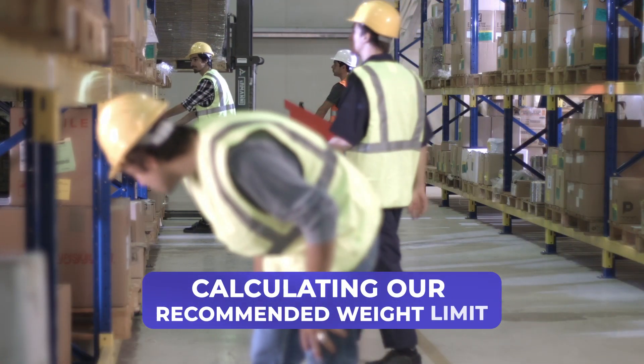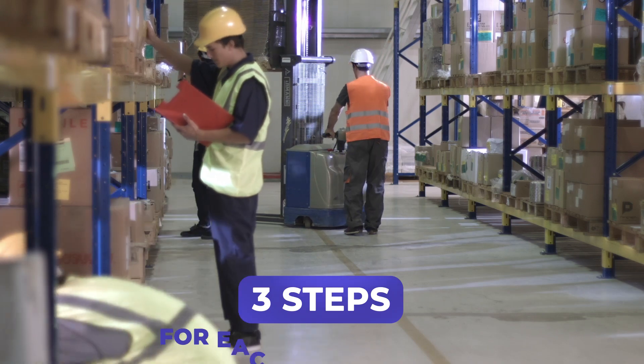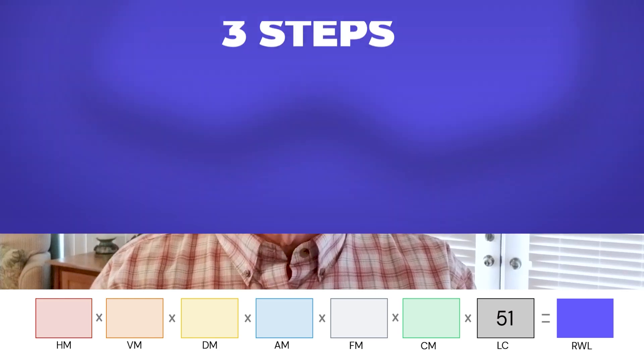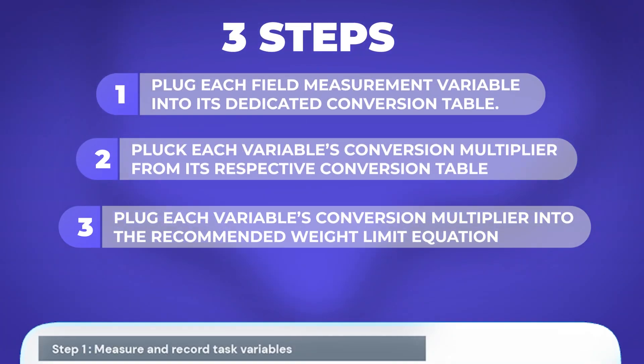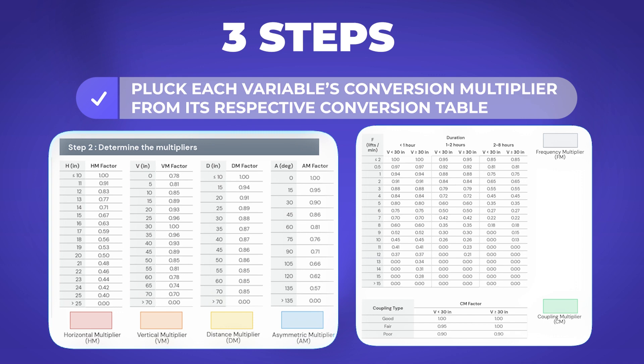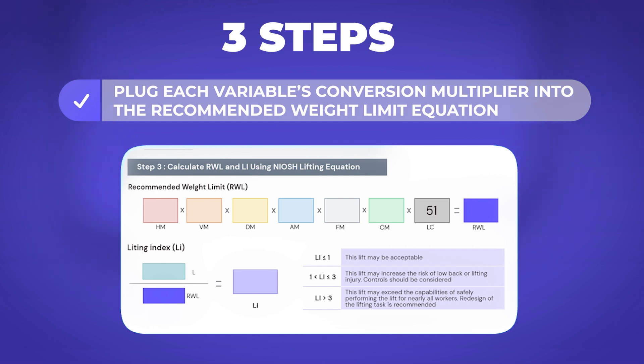Calculating our recommended weight limit will repeat a three-step process for each task variable. Committing simple tasks like this to memory will make the entire process smoother, easier, and far more accurate. Start by first collecting field measurements for all six components of the equation. Then perform these three simple tasks again and again: plug each field measurement into its dedicated conversion table, plug each variable's conversion multiplier from its respective conversion table, and plug each variable's conversion multiplier into the recommended weight limit calculation. Remember to follow this approach for each component to ensure accuracy and speed in the calculation.